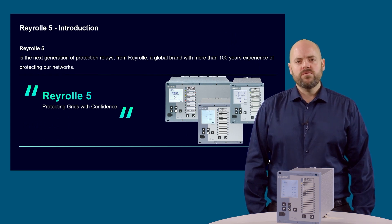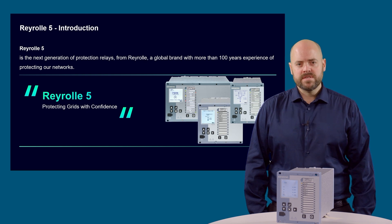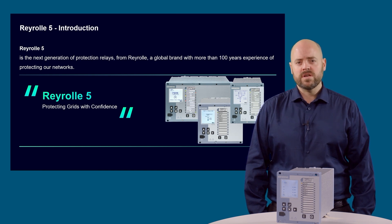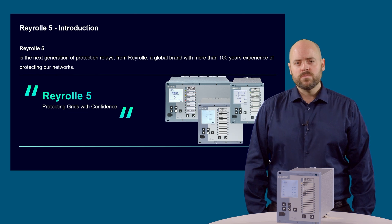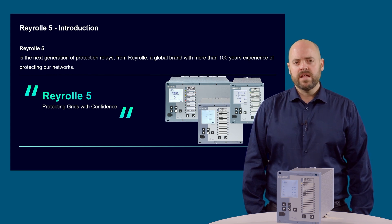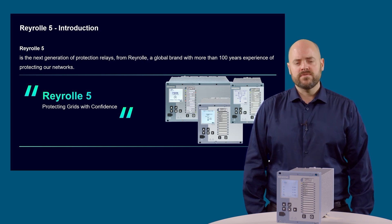The Rearroll 5 is a platform-based concept design with all models running the same base firmware, or what could be described as the operating system and application software applied from a software feature library developed over 35 years of numeric relay development. The hardware is also common across the range with the same look, feel and easy-to-use functionality both physically and throughout the menu structures.